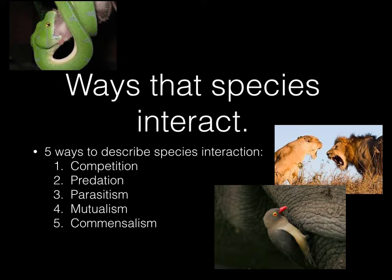So how do species interact? There are different ways that species interact, and they can actually interact in multiple ways — it doesn't just have to be one specific way. Five basic ways that species interact are: competition, predation, parasitism, mutualism, and commensalism. We'll go through and talk about each of these individually.